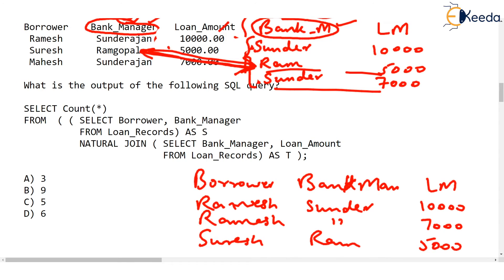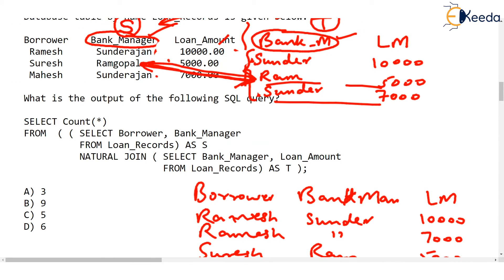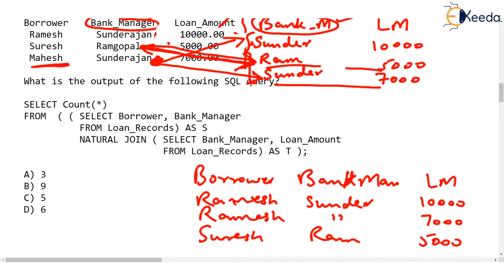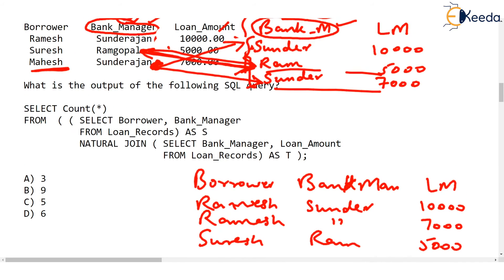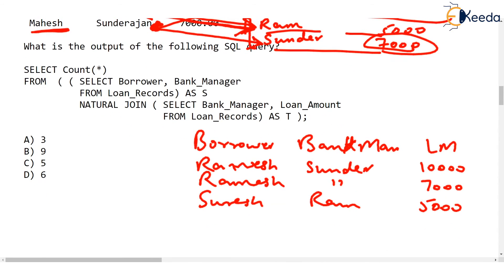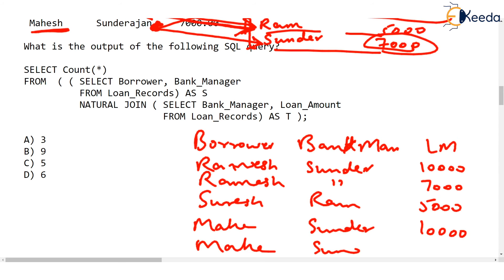Now notice something interesting. The third entry in S is Sundar Rajan, and it matches two times in relation T. That means Mahesh will also be listed two times. The rows for Mahesh will be: Mahesh, Sundar Rajan, 10,000 — and Mahesh, Sundar Rajan, 7,000.